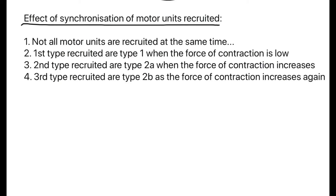Use Brainscape — it is a brilliant source for revision. Finally, we will talk about the effect of synchronization of motor units. Not all motor units are recruited at the same time. First, type 1 is recruited where the force of contraction is low. As force contraction increases, type 2a are recruited to cope with the increase in weight. If the weight is still too large for type 1 and type 2a, type 2b are recruited as force contraction increases again. Type 2b units are large, containing approximately 700 fast glycolytic muscle fibres each.